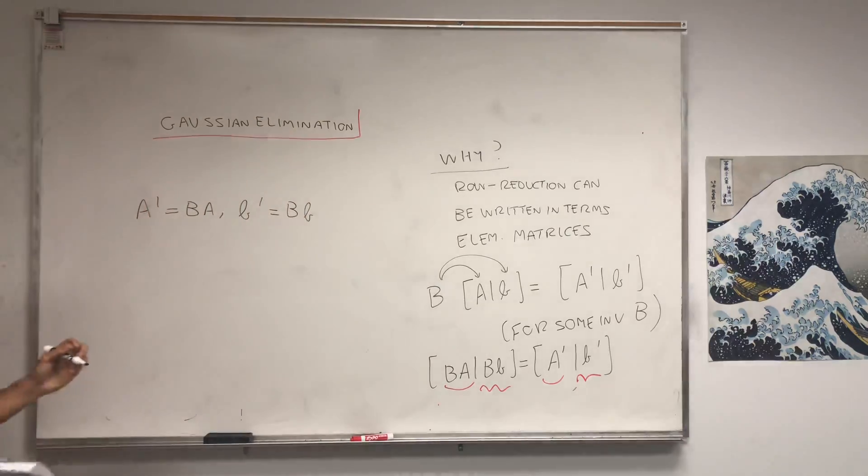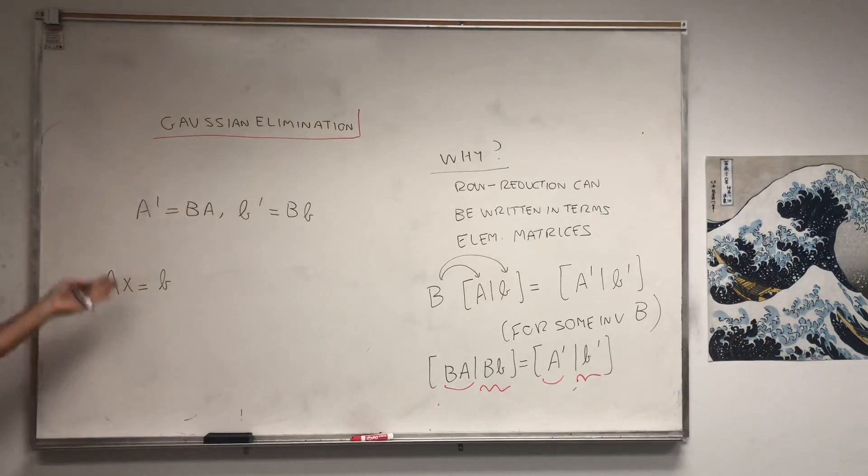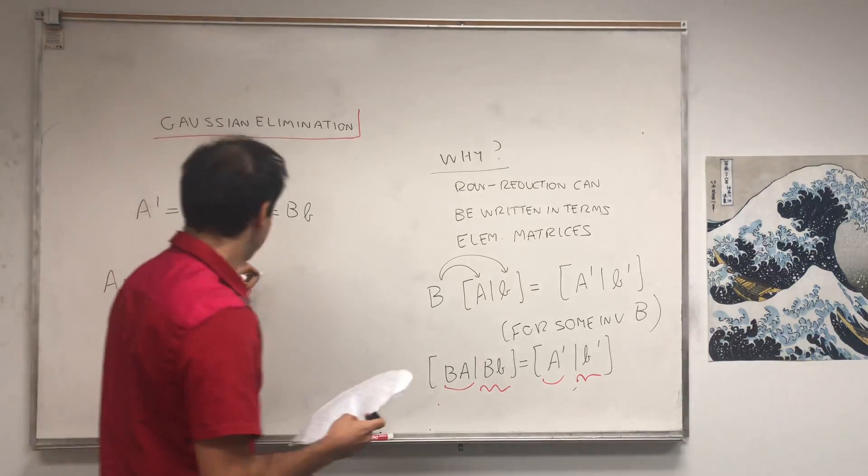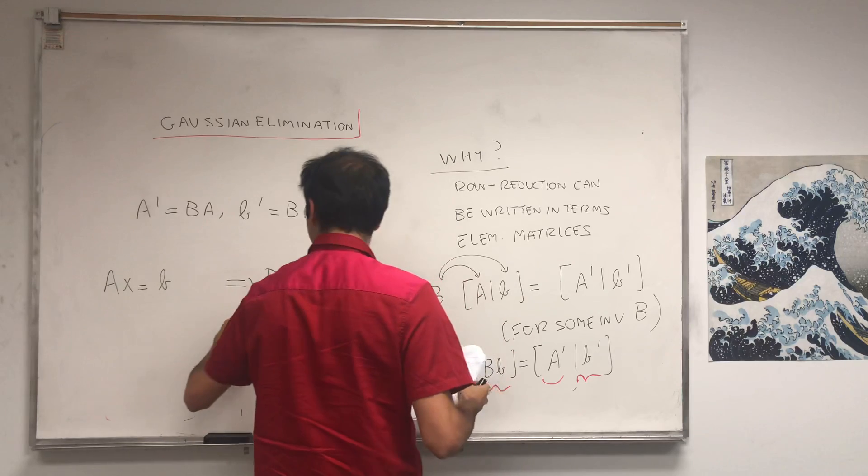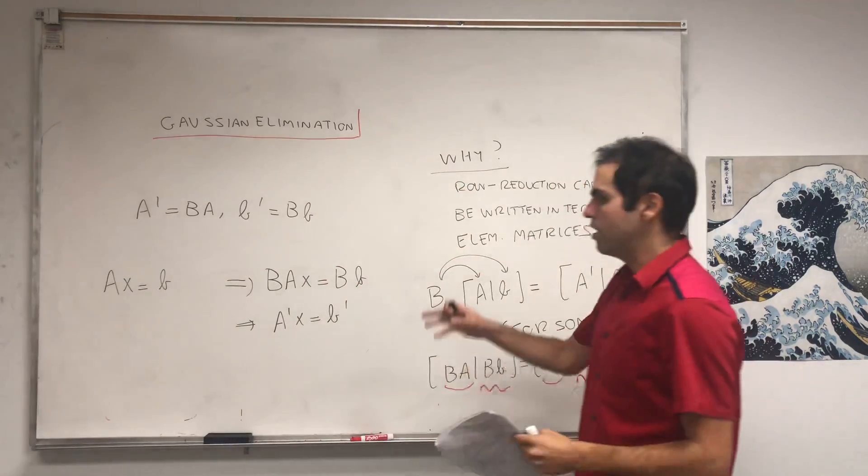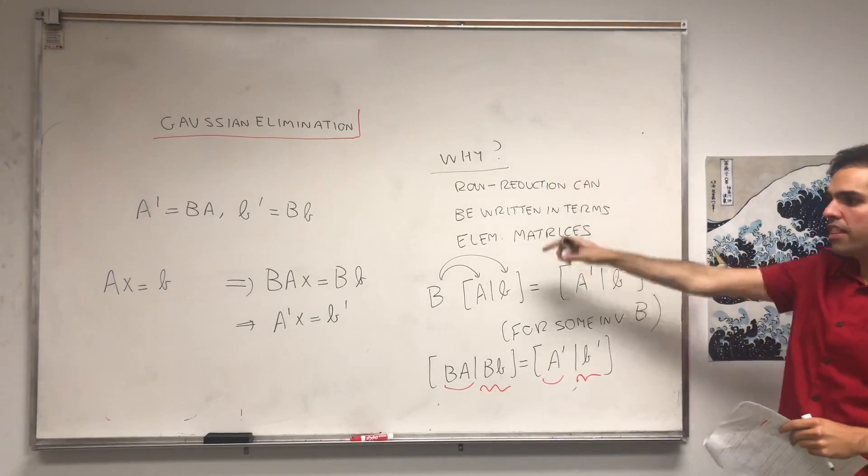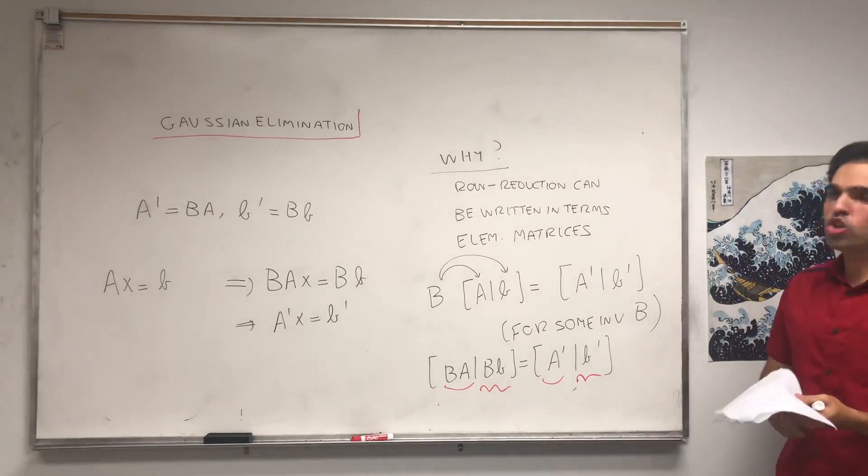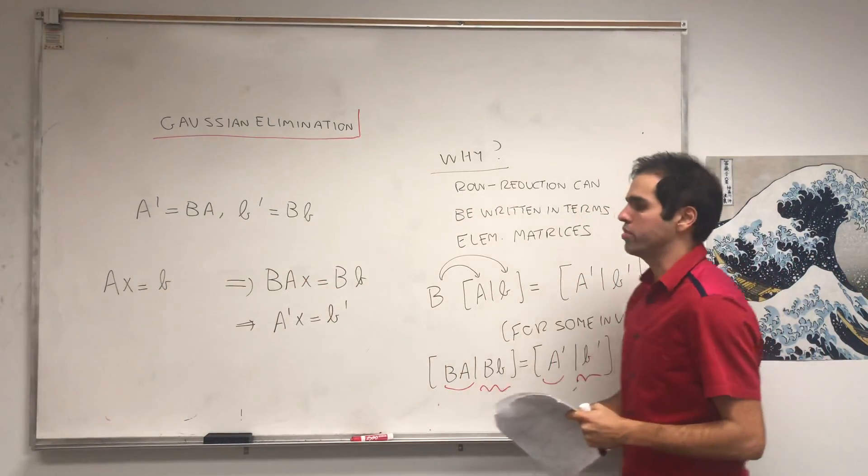So what does that imply? It implies that if you solve Ax equals B, you can actually get to A prime x equals B prime just by multiplying both sides by B. So in particular, BAx equals BB. In other words, if you have a solution of Ax equals B, then you have a solution of A prime x equals B prime. And in particular, we're not losing any solutions because solutions of this are contained in solutions of this.